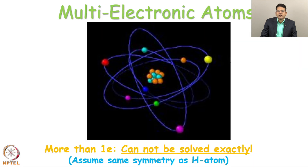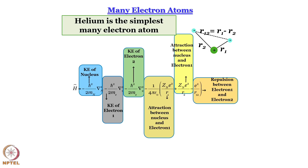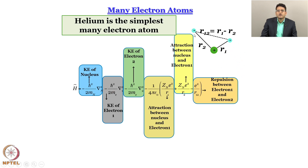From the hydrogen atom we now go to multi-electron atoms — more than one electron — which cannot be solved exactly, and we cannot assume the same symmetry as the hydrogen atom. The simplest example is the helium atom, which has one nucleus and two electrons. Its Hamiltonian includes the kinetic energy of electron one, kinetic energy of electron two, kinetic energy of the nucleus, attraction between the nucleus and electron one, attraction between the nucleus and electron two, and an electron-electron repulsion term — six terms in total.